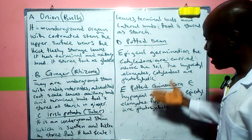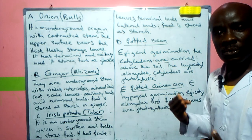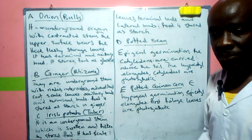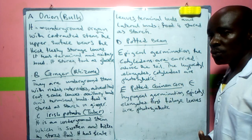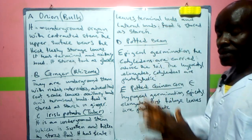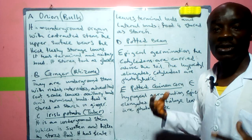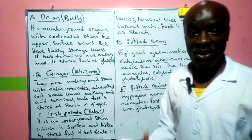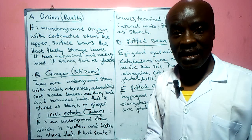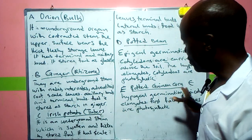The cotyledon is lifted above the soil because of the active elongation and growth of the hypocotyl. Because of this growth, the cotyledons are carried upward. These cotyledons are also photosynthetic, meaning they can manufacture their own food at the starting level until the plant finally matures.